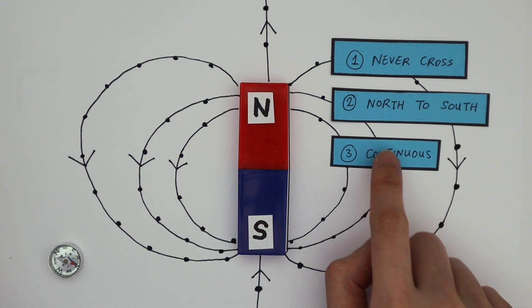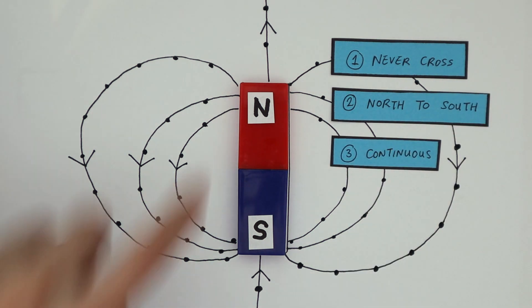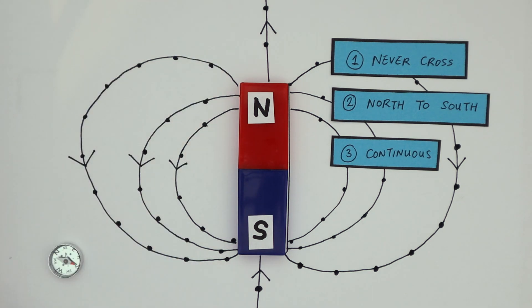Number three, they are continuous. The only reason these lines have been cropped out here is because I've simply run out of space.